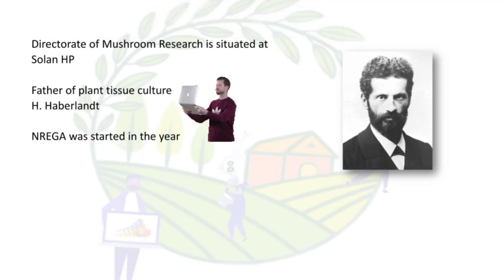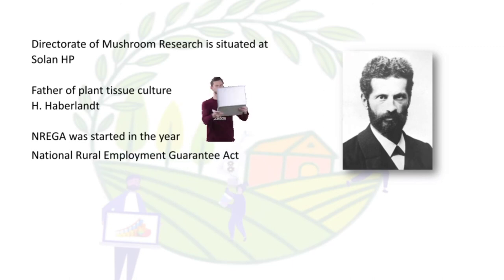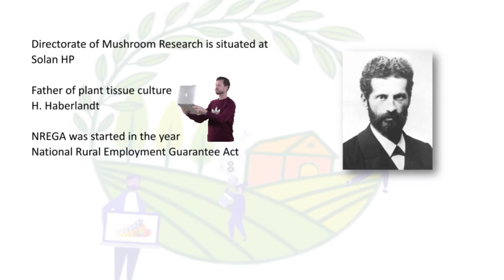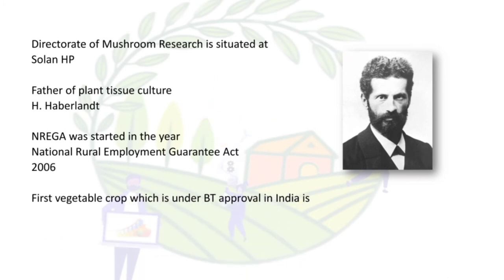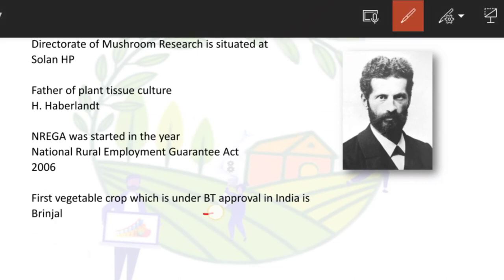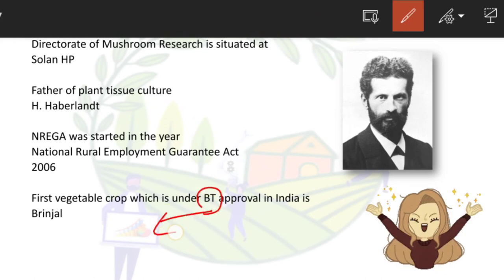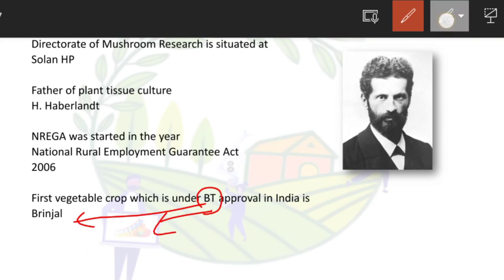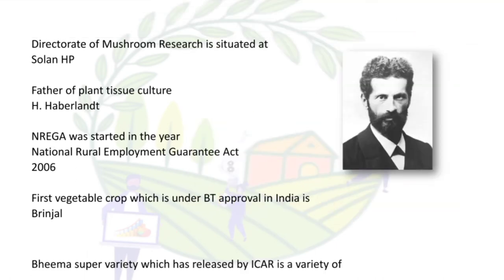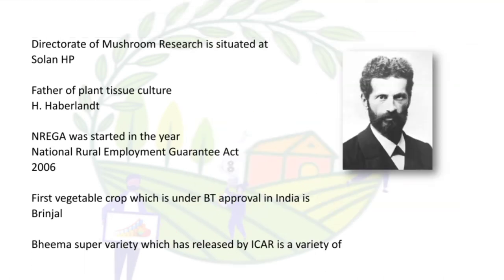NREGA — National Rural Employment Guarantee Act — was started in the year 2006. The first vegetable crop approved under Bt technology in India is brinjal. In the first word of Bacillus thuringiensis itself you can find the answer: Bt brinjal.